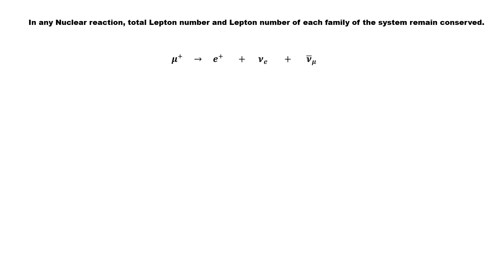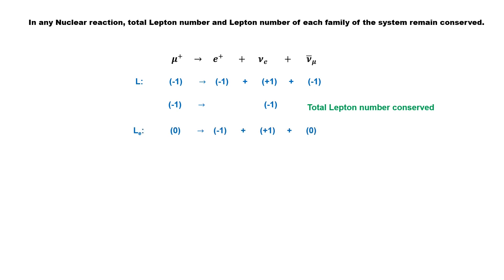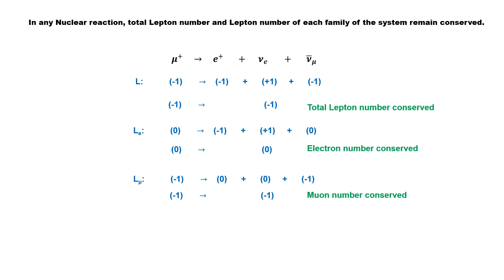To understand this with an example: muon decays to positron, electron neutrino, and muon antineutrino. Electron and neutrino have lepton number +1, while positron and antineutrino are anti-leptons with lepton number −1, so the total lepton number is conserved. For electron number: positron and electron neutrino are members of the electron family, and the number is conserved. For muon number: muon and antineutrino are members of the muon family, and that number is also conserved. Since total lepton number and lepton number in each family are all conserved, this reaction is allowed.